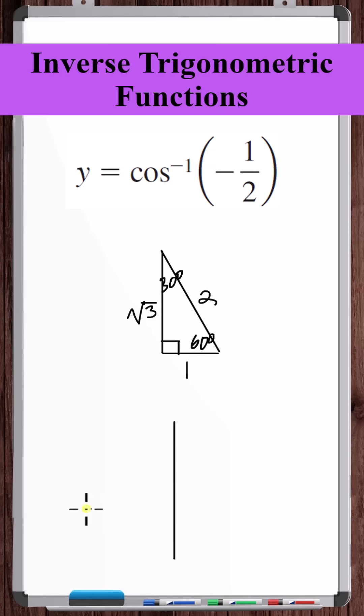Now, if we think about the definition of trig functions, an angle with reference angle 60 degrees in the second quadrant would have cosine of minus one-half, and this angle is 120 degrees. So, this is equal to 120 degrees.